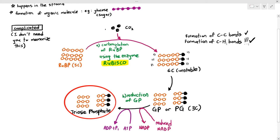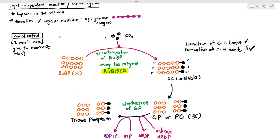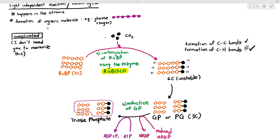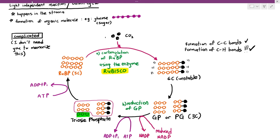There are six triose phosphate molecules produced. To regenerate three RuBP, only five of those triose phosphates are needed, because five triose phosphates contain 3+6+9+12+15 = 15 carbons total. Those five triose phosphates are broken down and reformed to regenerate the three RuBP molecules, but this process requires ATP — which is why the light-dependent reaction must produce extra ATP.